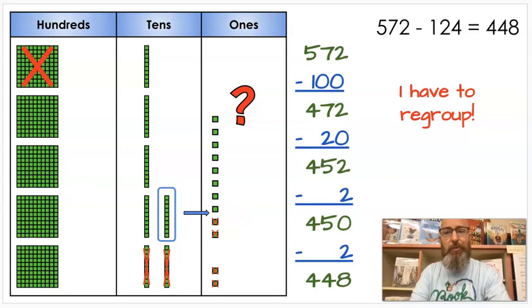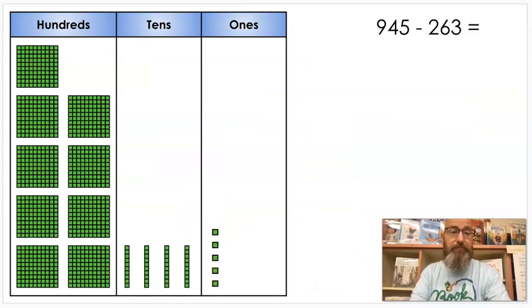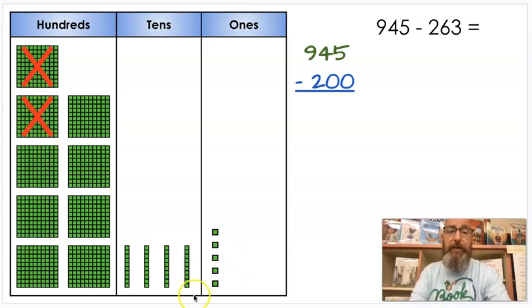Now, let's do one more. We're going to regroup here too. I want to show you how to do it, just so you understand. We have a big number now: 945. I have 940, 10, 20, 30, 40, 1, 2, 3, 4, 5. I'm going to subtract 263. So again, I start with the hundreds, that's right. So I'm going to go ahead and cross out two hundreds. Again, my 45 here didn't change, but now I have 700 because 9 minus 2 is 7. So 900 minus 200 is 700.